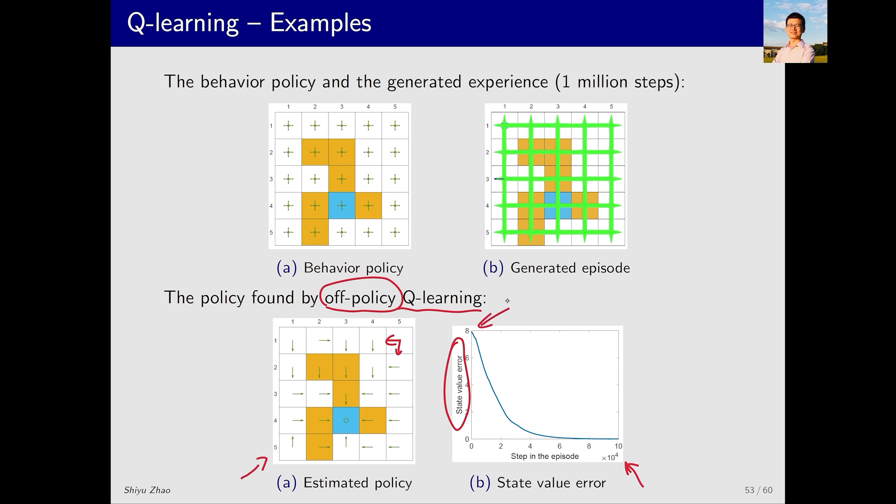Initially, the policy is not very good. There is a huge difference from the optimal state value. But ultimately, the policy becomes very good, and the corresponding state value is almost identical to the optimal one.